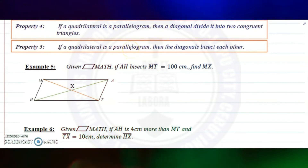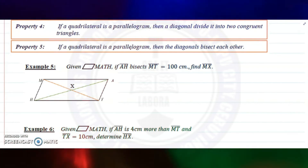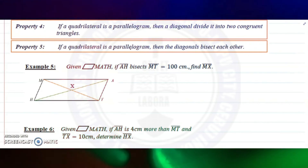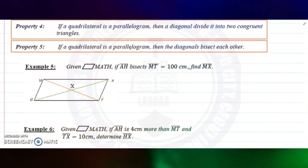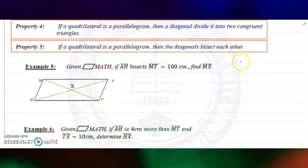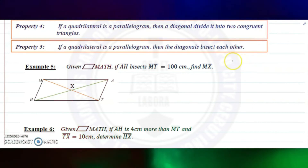Property number four: if a quadrilateral is a parallelogram, then a diagonal divides it into two congruent triangles. Property number five: if a quadrilateral is a parallelogram, then the diagonals bisect each other.